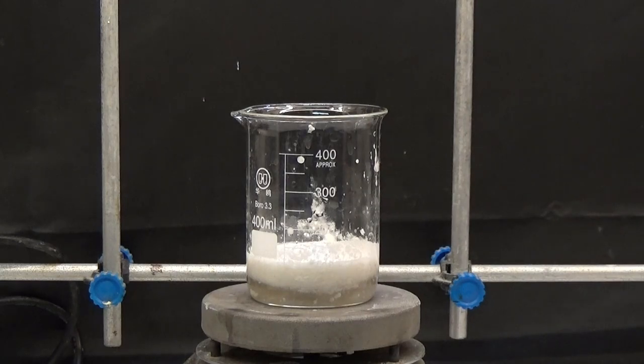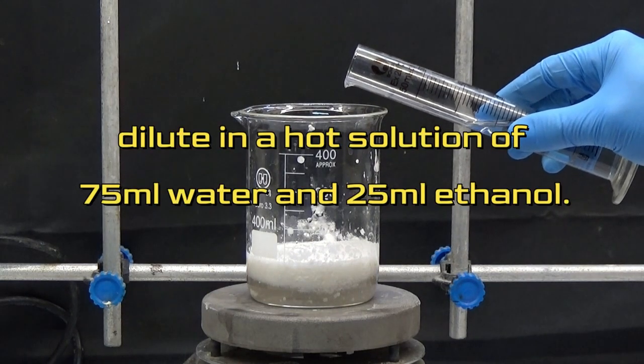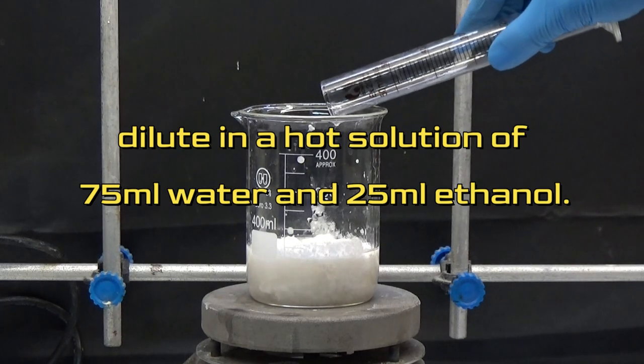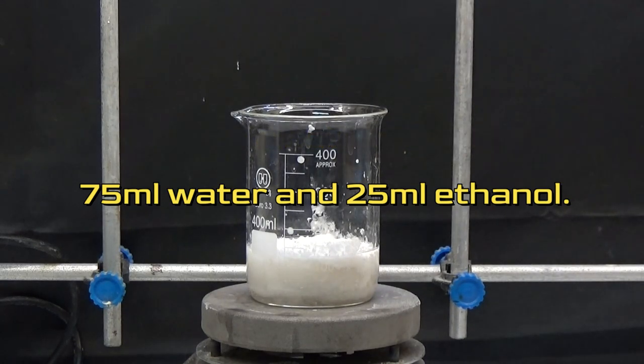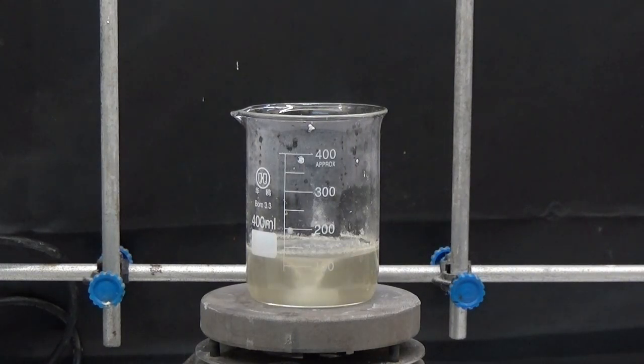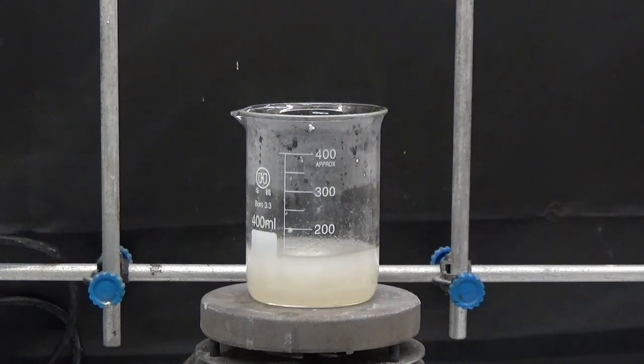For purification, crystallize with a solution of 75 milliliters of water and 25 milliliters of hot ethanol. Let cool and refrigerate for 12 hours to make sure the product crystallizes as much as possible.